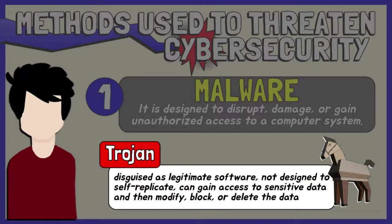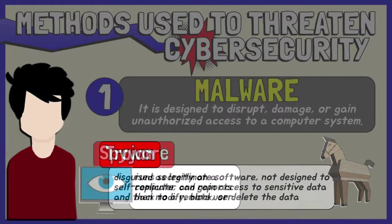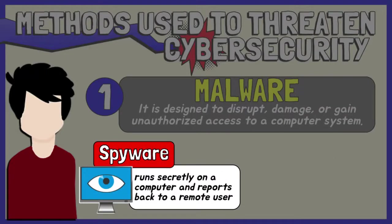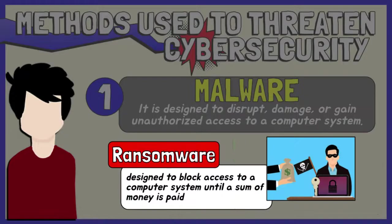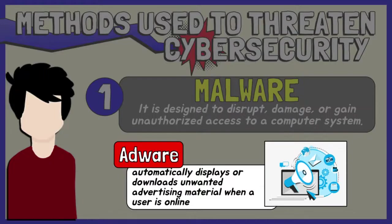Trojan is a type of malware that is disguised as legitimate software. It can gain access to sensitive data and then modify, block, or delete the data. Unlike normal viruses and worms, Trojans are not designed to self-replicate. Spyware is malicious software that runs secretly on a computer and reports back to a remote user. It targets sensitive information and can grant remote access to predators. A specific type of spyware is a keylogger, which records your keystrokes to reveal passwords and personal information. Ransomware is malicious software that gains access to sensitive information within a system, encrypts that information so that the user cannot access it, and then demands a financial payout for the data to be released. It is commonly part of a scam. Adware is malicious software used to collect data on your computer usage and provide advertisements to you. It can also redirect your browser to unsafe sites, and it can even contain Trojan horses and spyware.